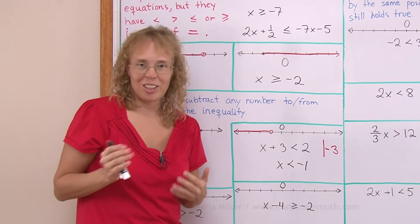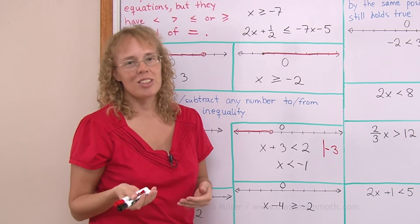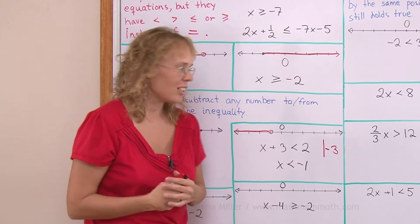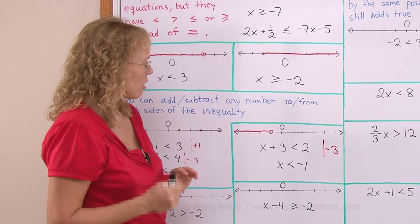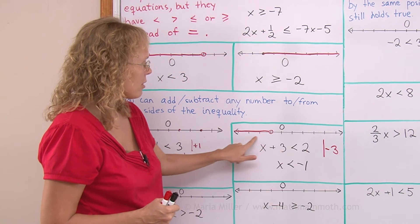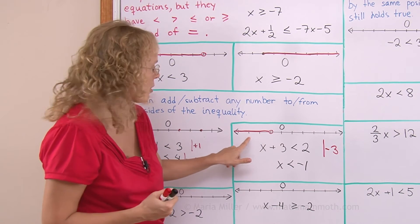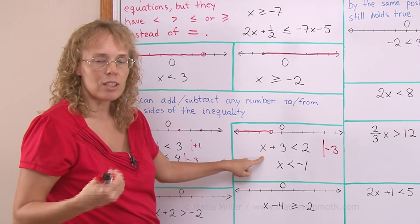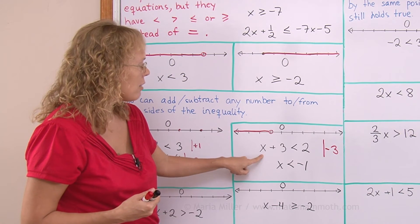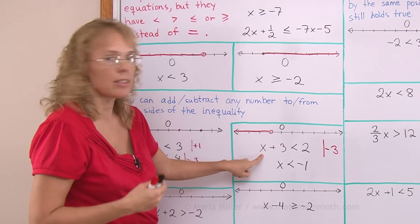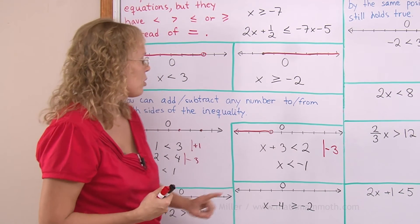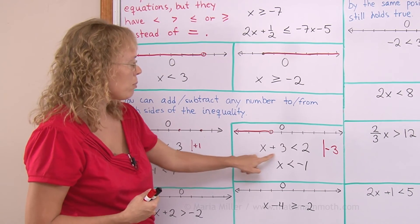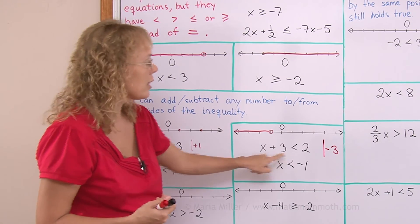You can check your solution by taking numbers from the solution set you plotted. Take negative 3 and substitute it: negative 3 plus 3 equals 0, and yes, 0 is less than 2. Try negative 2: negative 2 plus 3 equals 1, and yes, 1 is less than 2. The checks confirm the solution.